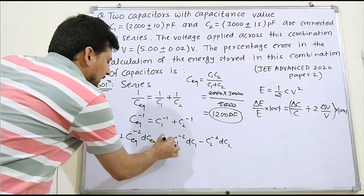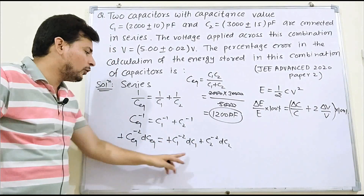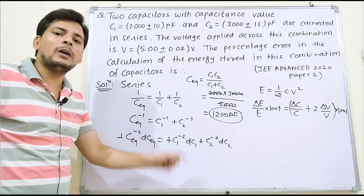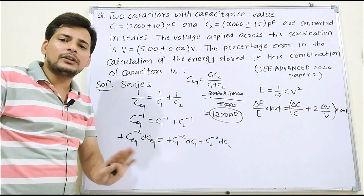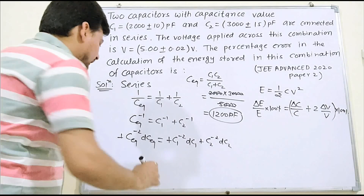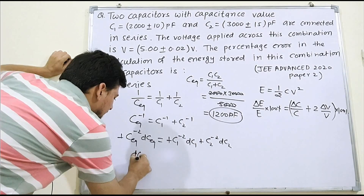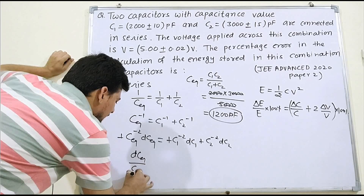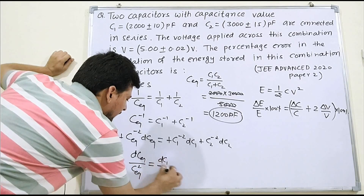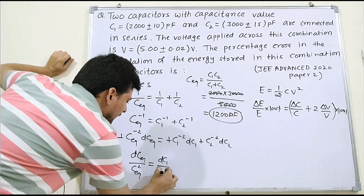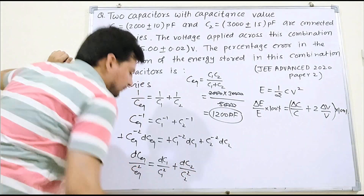Minus signs cancel throughout — and as mentioned in the previous video, even if a minus sign remains, we make it plus, because errors always add up, they never subtract. So we can write: dC_eq / C_eq² = dC1 / C1² + dC2 / C2².